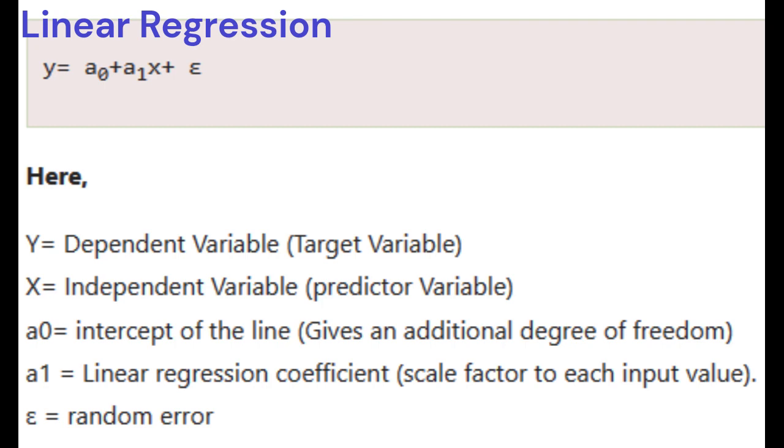A0 is the intercept of the line, gives an additional degree of freedom. A1 is the linear regression coefficient, the scale factor to each input value. Epsilon is the random error.